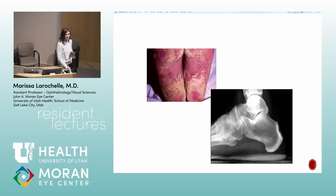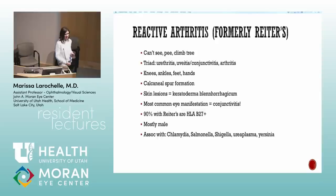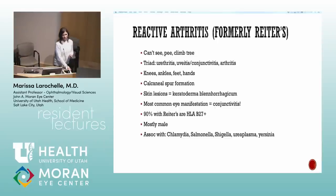Inflammatory back pain pattern: if it's worse in the morning, wakes you up from sleep, and then gets better throughout the day, that's inflammatory arthritis. Reactive arthritis — can't see, can't pee, can't climb a tree. The most common eye manifestation is conjunctivitis, not uveitis, though uveitis can be part of it. Patients get heel spur formation and the skin lesion keratoderma blennorrhagicum, and are often B27-related.